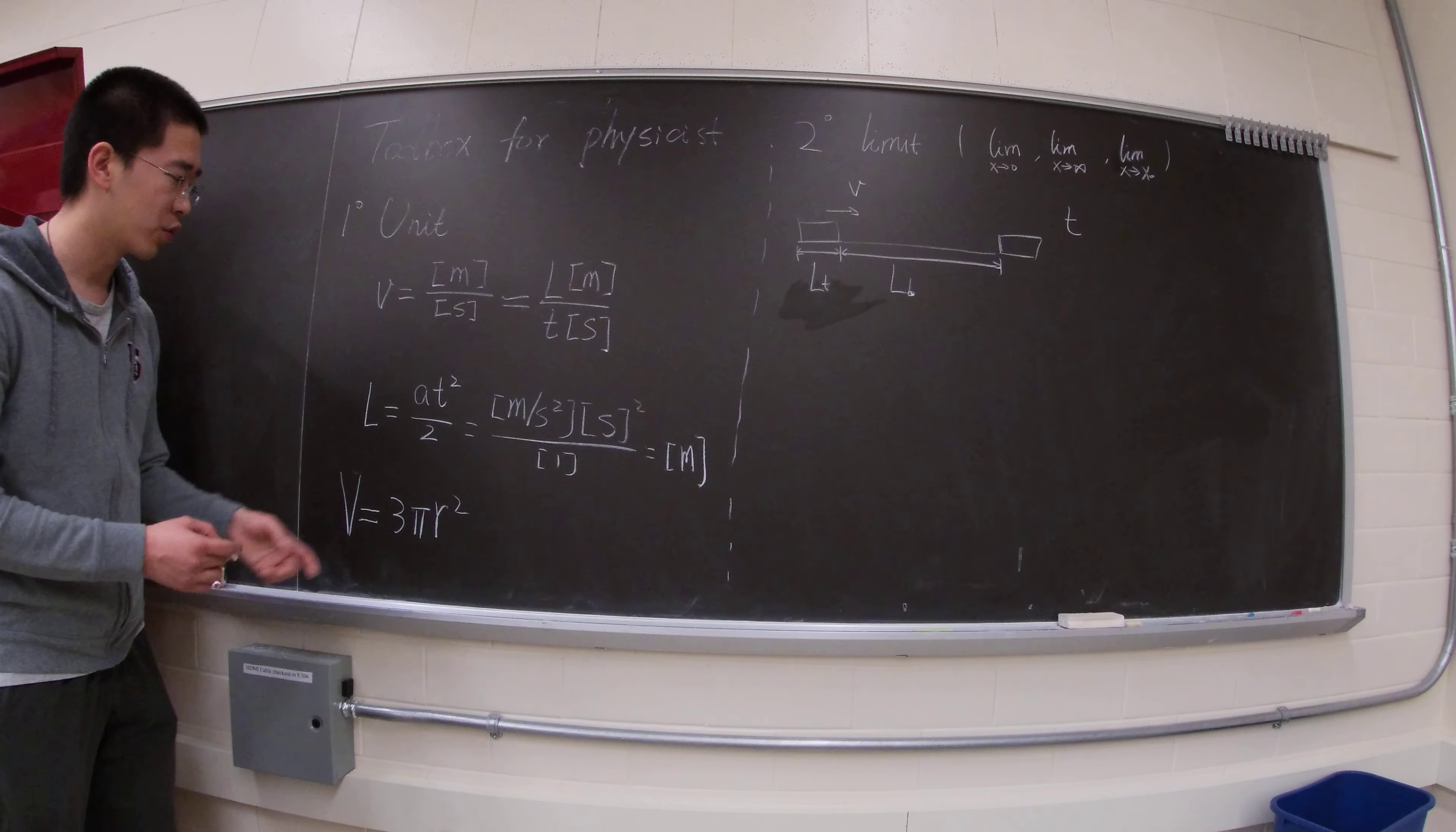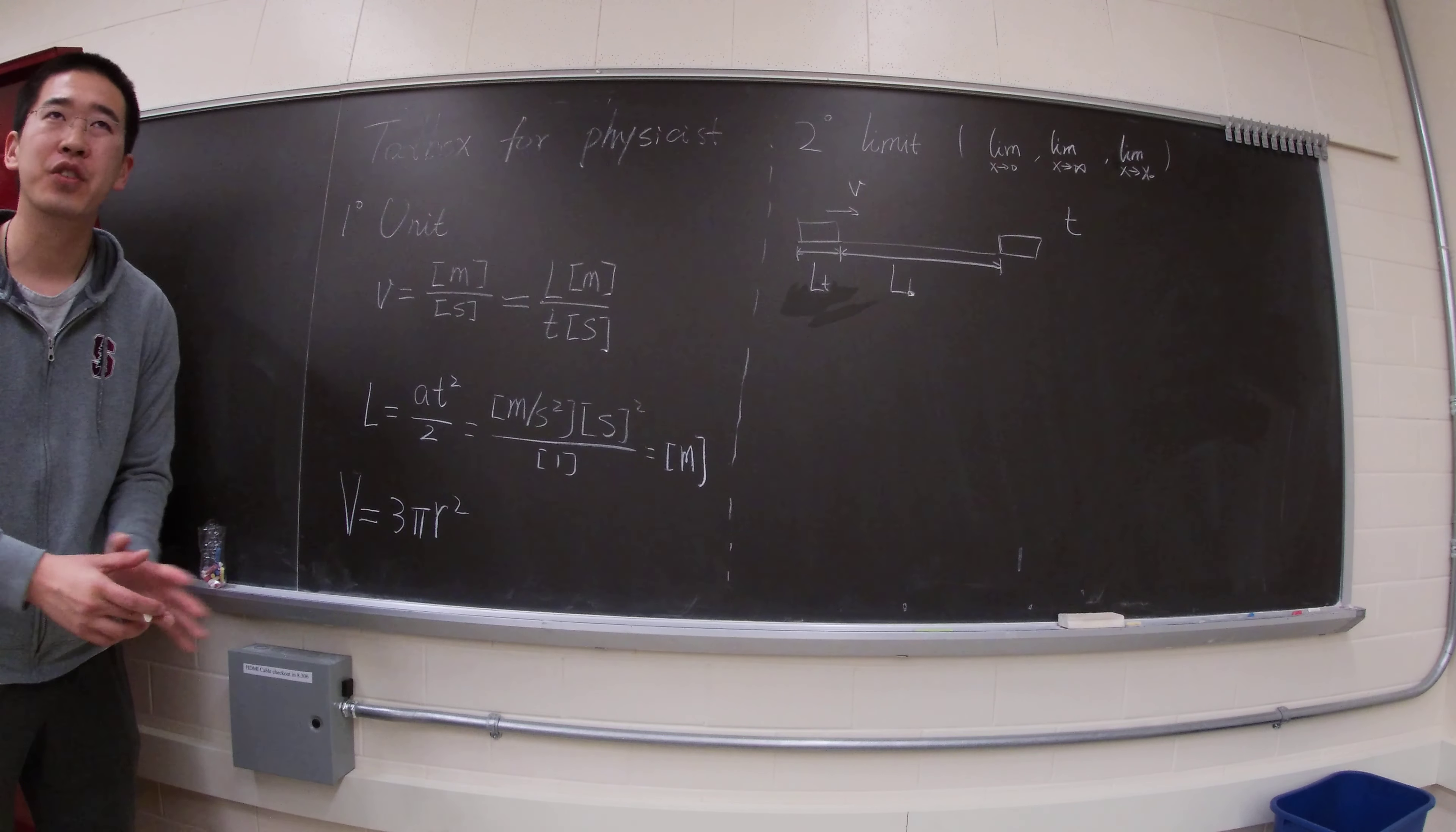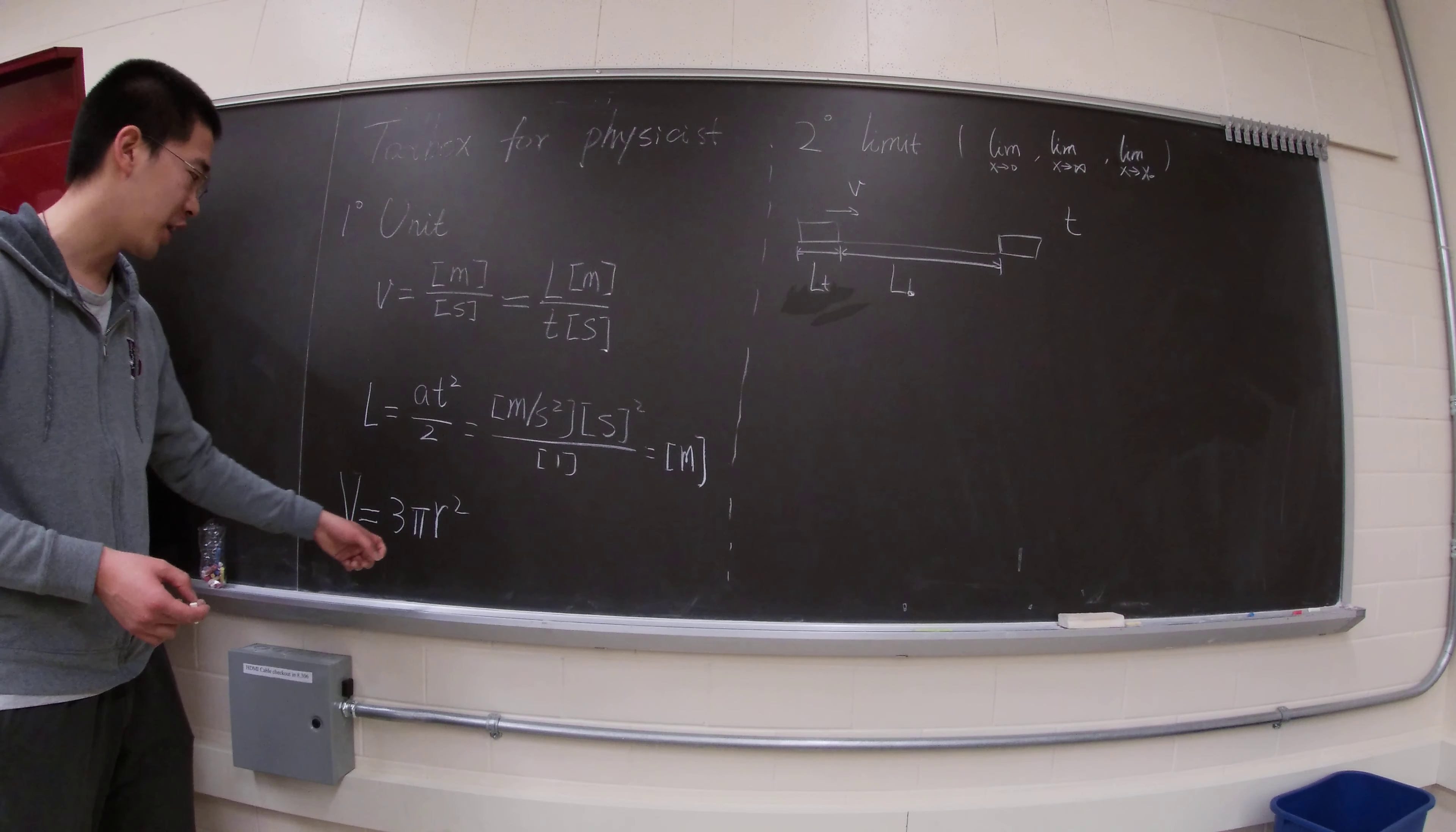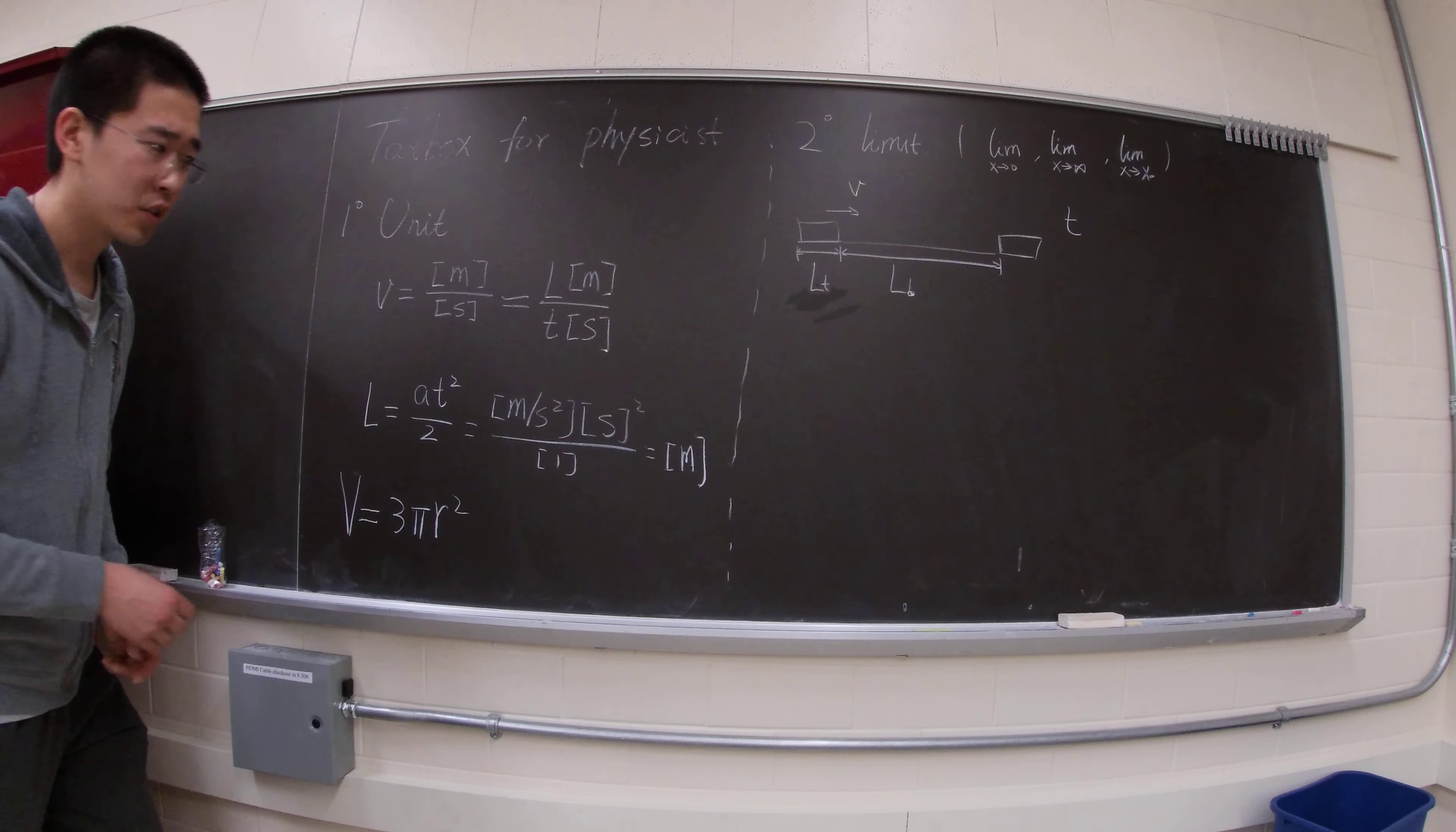Then yes, so one of the examples I can think of is, for instance, after you solve a lot of complicated question, you ended up getting this expression. So volume equals to 3 pi R squared. So you should be stuck.